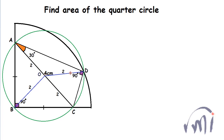Angle COD will be double the angle CAD because the angle subtended by an arc at the center is double the angle subtended by the same arc at the rest of the perimeter. So angle COD equals 60 degrees. Triangle COD is an isosceles triangle — in fact it is equilateral, since both base angles also equal 60 degrees. Therefore side CD is also equal to 2 centimeters.